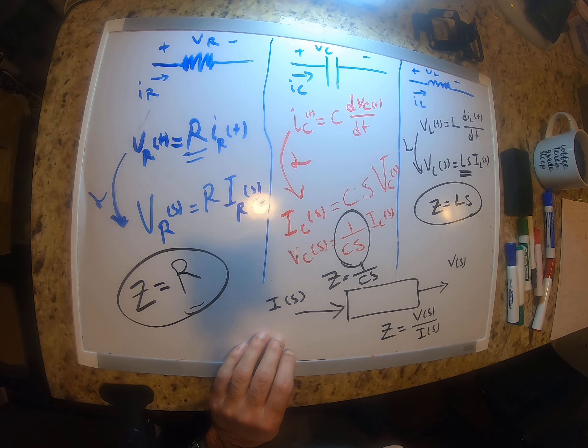Using impedance makes this very simple — we can treat both elements as two impedances and apply a basic voltage divider. V_C in the S domain equals the impedance of the capacitor, 1 over (jωC), divided by R + 1/(jωC), times V_in. Simplifying by multiplying by jωC, we get 1/(1 + jωRC), so the transfer function is 1/(1 + SRC).